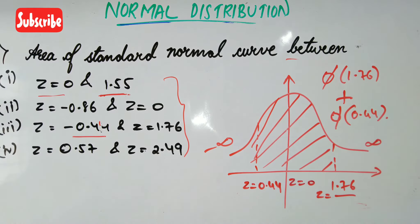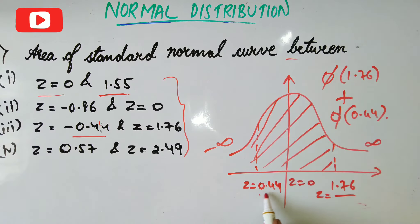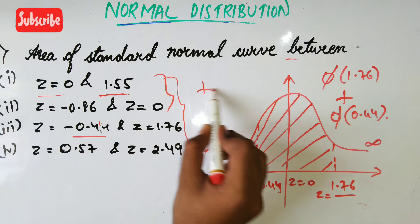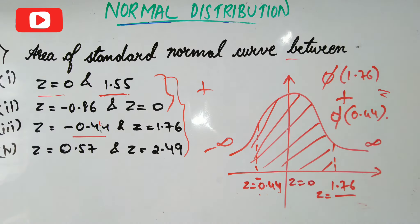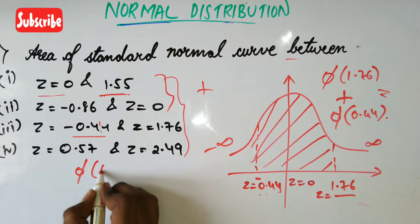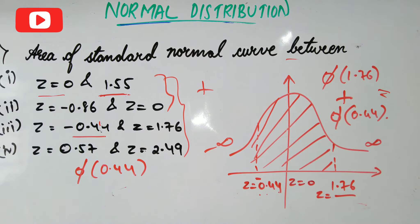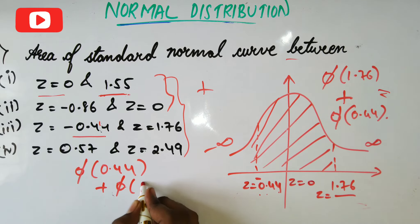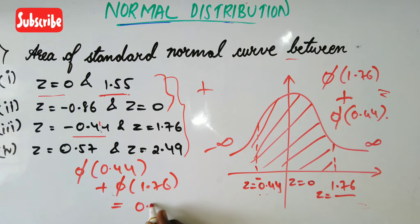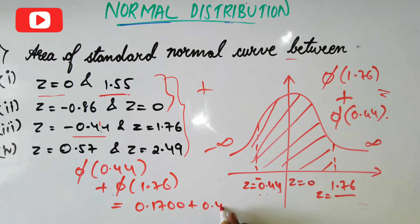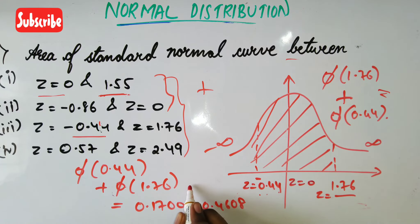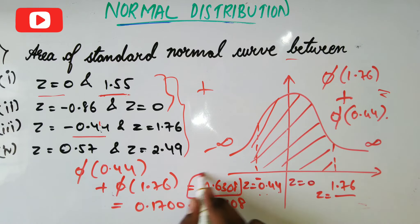From zero to some value is φ of that value. From zero to 1.76 is φ(1.76), and the left portion — from zero to minus 0.44 — gives us φ(0.44), since we ignore the negative sign. Adding both: φ(0.44) plus φ(1.76) equals 0.1700 plus 0.4608, which gives a final answer of 0.6308.